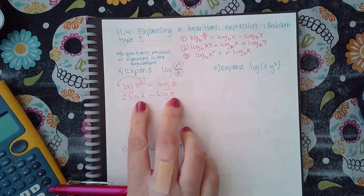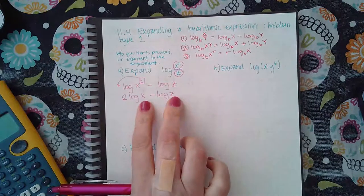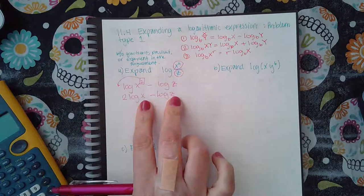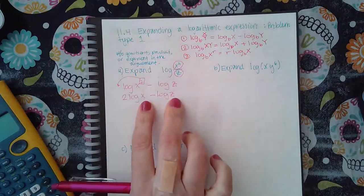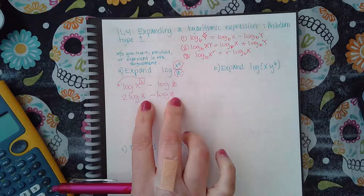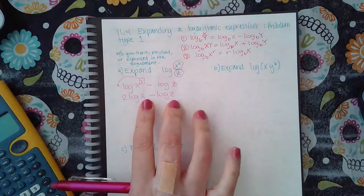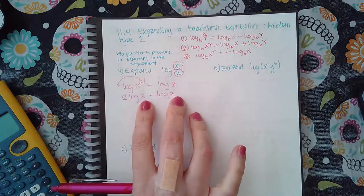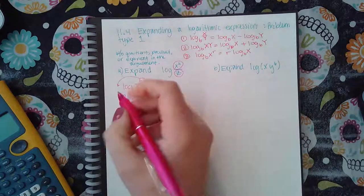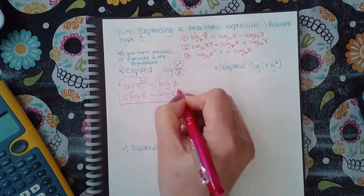So this becomes 2 log x minus log z. And now if you look at both of the arguments, neither one of these arguments has a product, something multiplied together, neither one of these arguments has a quotient, something being divided by something, and so then I am finished with expanding that particular problem.